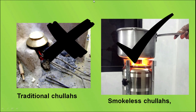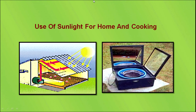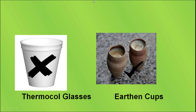Here is a picture of a traditional chula and a smokeless chula. The traditional chula emits a vast amount of smoke, so it is non-eco-friendly. The smokeless chula does not use a vast amount of energy and also does not emit a vast amount of smoke, making it an eco-friendly practice. Here is also a picture of use of sunlight for home and daily cooking using solar cookers. Here are pictures of a thermocol glass and earthen cups — the thermocol glass is non-biodegradable and non-eco-friendly, while the earthen cups are biodegradable and eco-friendly.